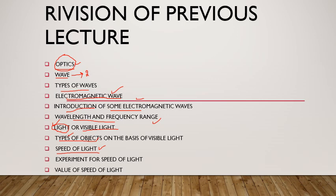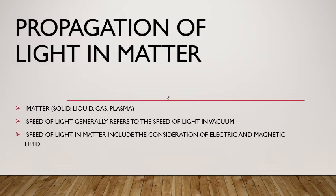اس کے بعد ہم نے speed of light کو discuss کیا تھا، جس میں different scientists کے experiments دیکھے۔ Hippolyte کا experiment details سے پڑھا تھا۔ Speed of light کی value ہم نے find out کی تھی: 299,792,458 meters per second، جسے roundabout ہم 3×10⁸ meters per second لیتے ہیں۔